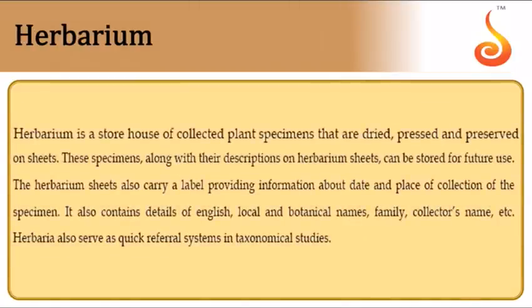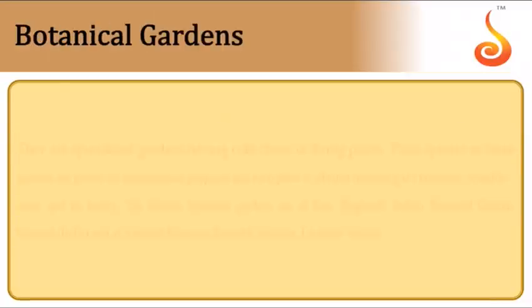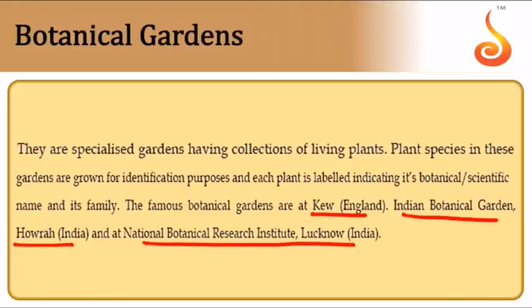A herbarium involves collecting a plant specimen, drying it well, treating it with fungicides to prevent contamination, pressing and preserving it on a sheet with information including date and place of collection, local/vernacular name, English name, botanical or scientific name, and who collected it. Botanical gardens are examples of ex situ conservation, bringing plants from different parts of the world to one place.